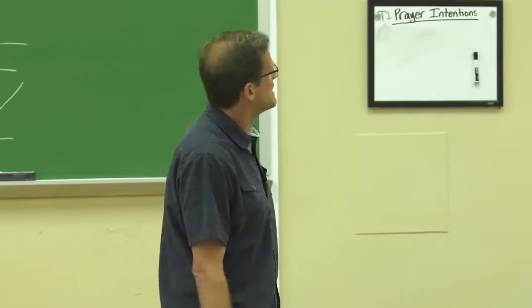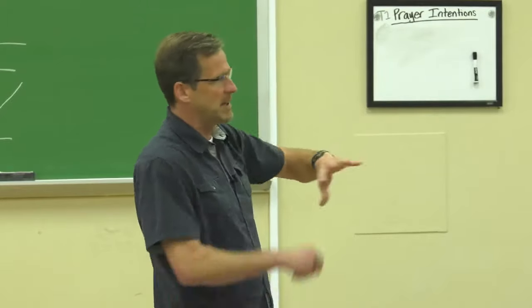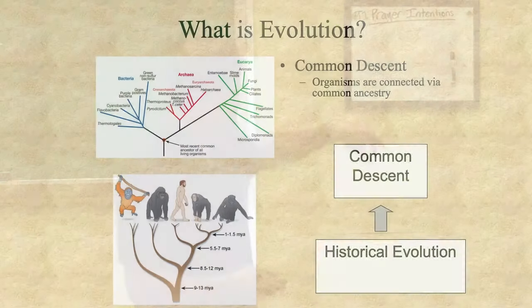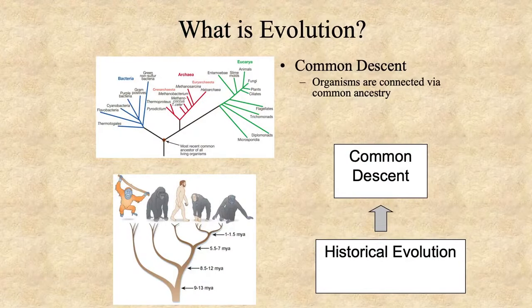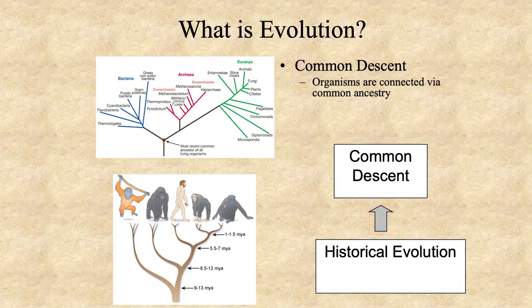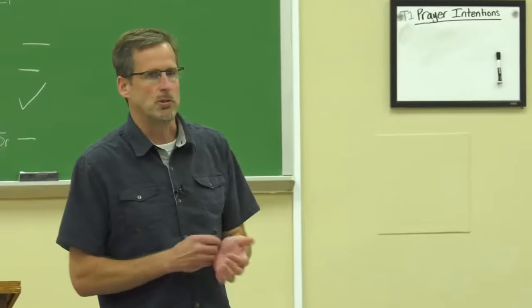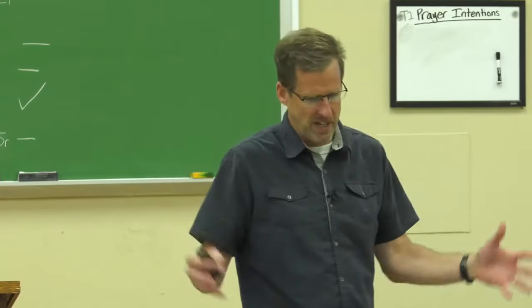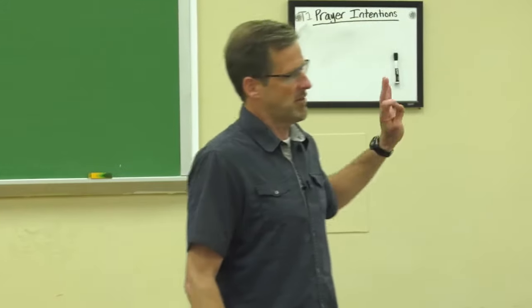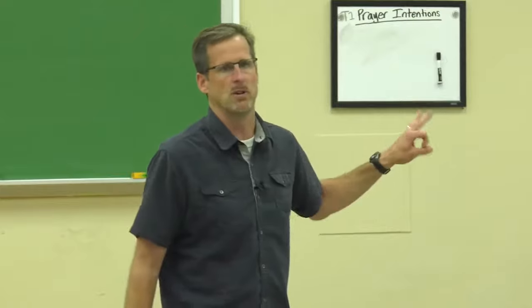I think one of the best pieces of evidence for common descent, at least for the tree that we're going to be looking at with humans and modern chimps and the other great apes, is things called processed pseudogenes. A lot of people use DNA evidence, the similarities in DNA and genes. But I think this is the best because there's no functional reason for this.